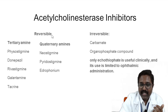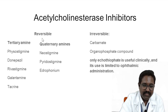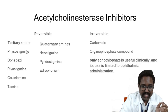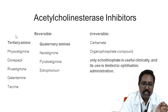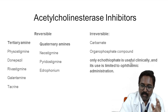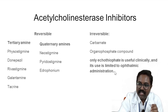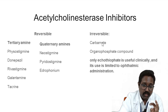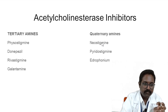Classification of acetylcholinesterase inhibitors: reversible inhibitors include tertiary amines — physostigmine, donepezil, rivastigmine, galantamine, and tacrine — and quaternary amines — neostigmine, pyridostigmine, and edrophonium. Tertiary amines can cross the blood-brain barrier, whereas quaternary amines are confined to peripheral action. Irreversible inhibitors include carbamate, organophosphate compounds, and echothiophate. Among irreversible inhibitors, only echothiophate is used clinically in glaucoma treatment, whereas carbamate and organophosphate compounds are very toxic.